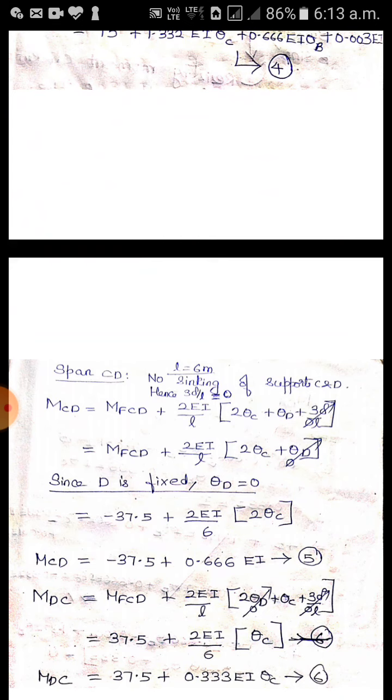Coming to last span CD. Both the supports C and D are not sinking, so no sinking of supports. So 3 delta by L is going to be 0. M_CD equal to MF_CD plus 2EI by L times 2 times theta_C plus theta_D. So 3 delta by L is 0. Again theta_D is 0 because D is also a fixed support. So apply the values. M_CD and M_DC you get the values.